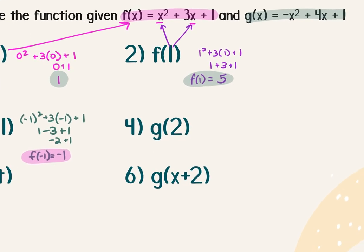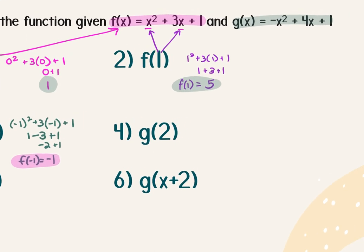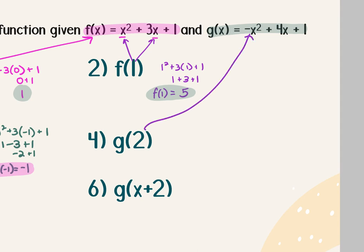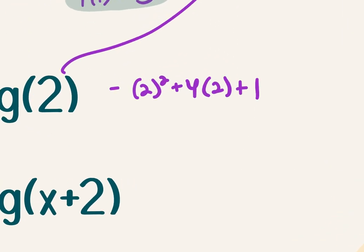Number 4: g of 2. Instead of plugging into f, we're plugging into the g function. Watch your signs here — this is negative 2 squared plus 4 times 2 plus 1. What comes first in PEMDAS — exponent or multiplication? Exponent. So we raise 2 to the power of 2 first and then multiply by negative 1, which means this is negative 4 plus 8 plus 1, which is 4 plus 1, which is 5.